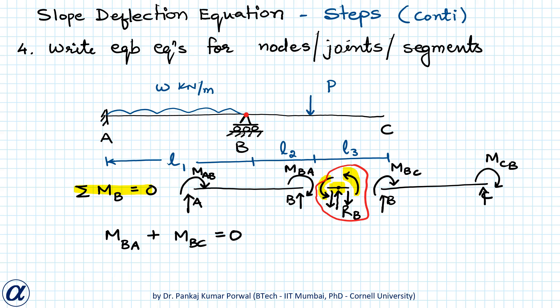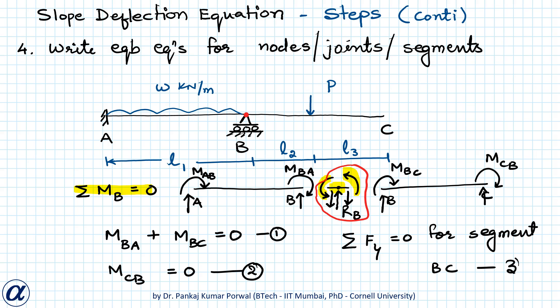Similarly, the sum of all end moments at joint C equals zero. Since only member BC connects at joint C, M_CB = 0. This is the second equilibrium equation. The third equation is a force equilibrium equation for segment BC in the vertical direction (ΣF_y = 0). Thus we have three equations corresponding to the three unknowns: θ_B, θ_C, and δ_BC.